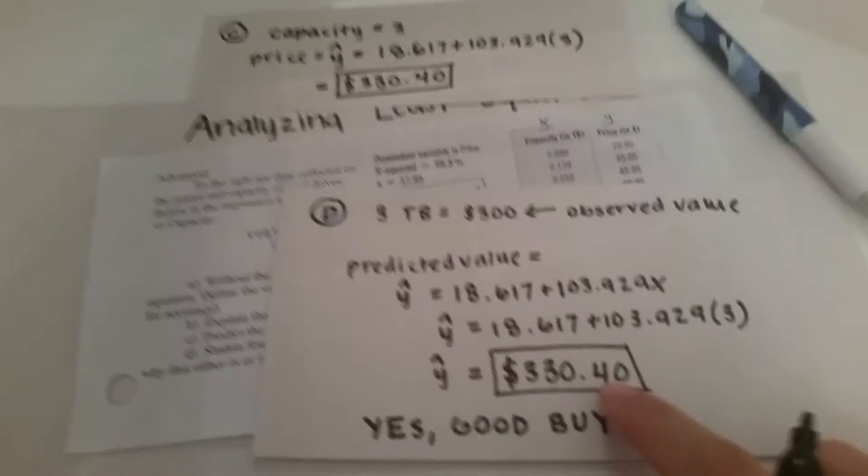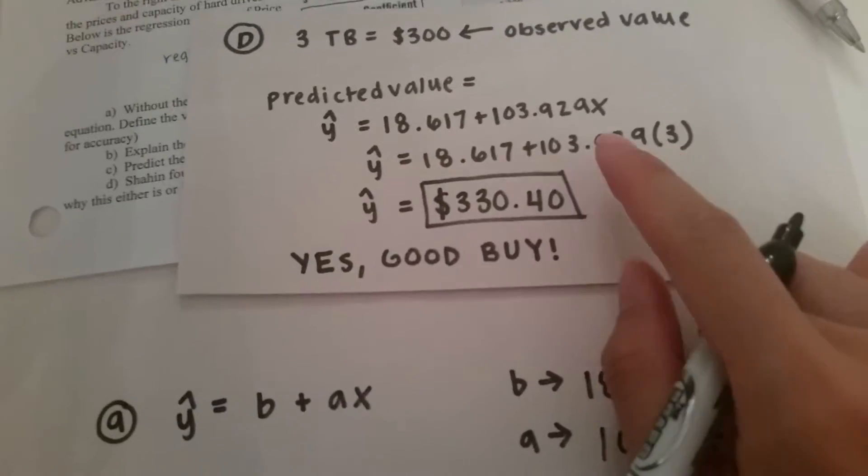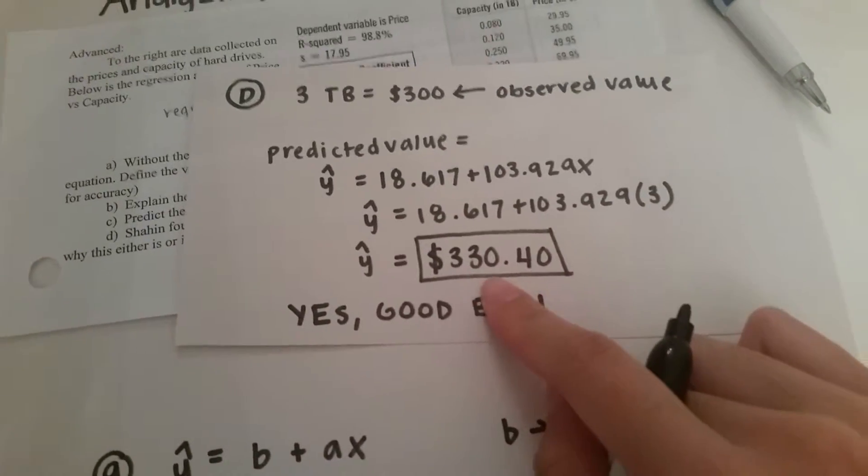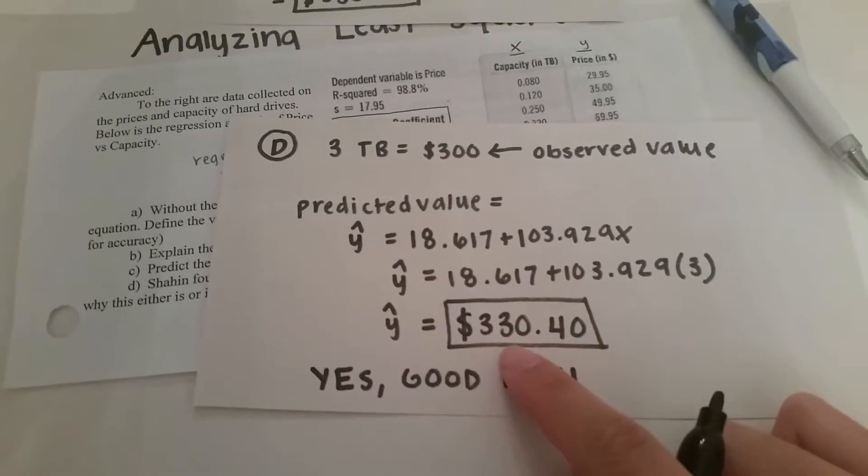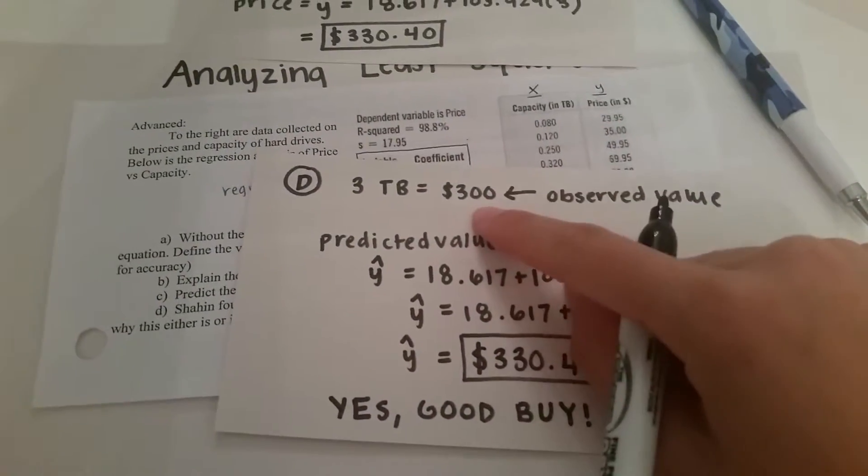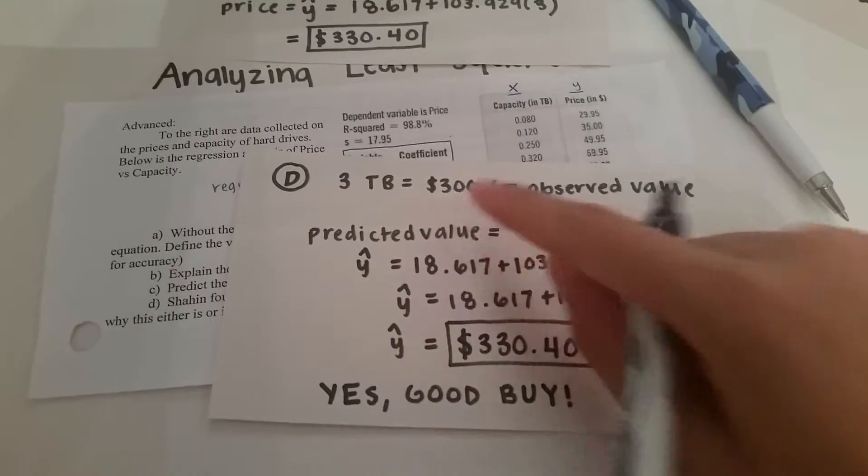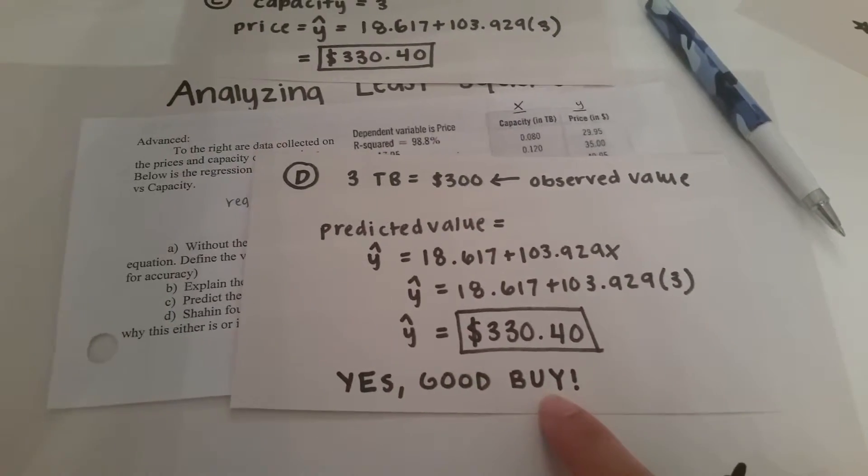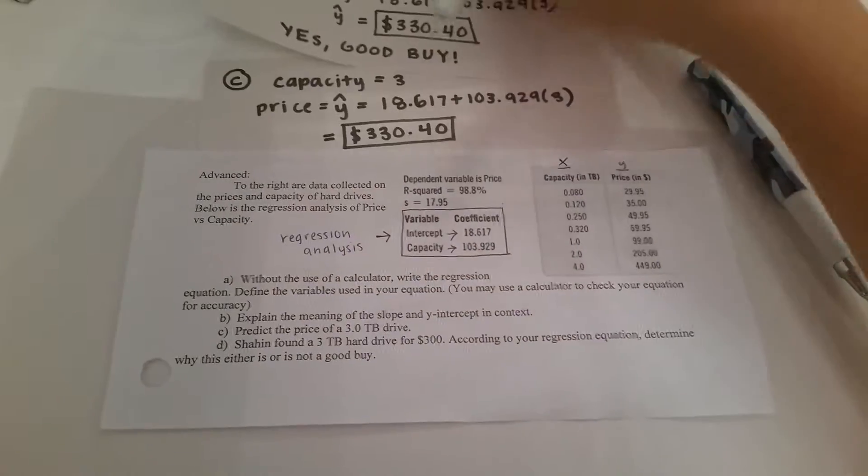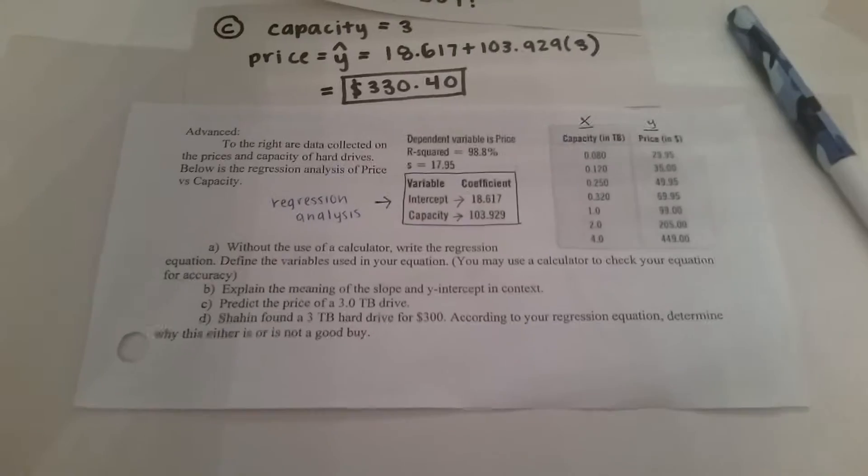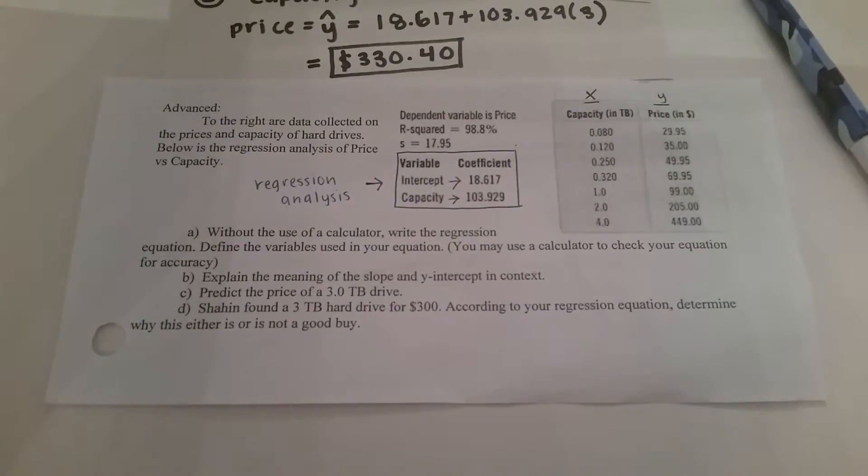Well just now we had input 3 into the equation and we got that the estimated value predicted value would be 330 whereas he bought it for only 300 and thus it is a good buy because it is cheaper by about 30 dollars and 40 cents. Now that concludes the advanced problem.